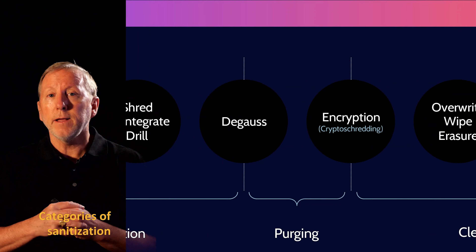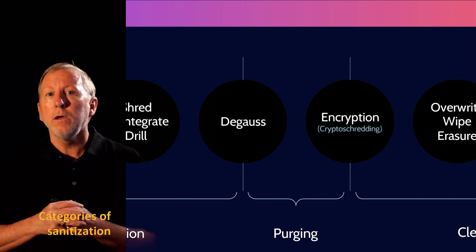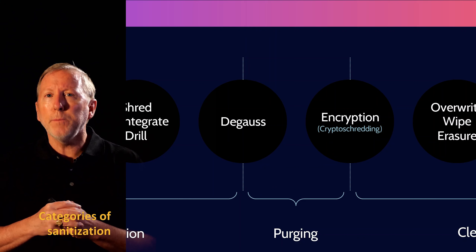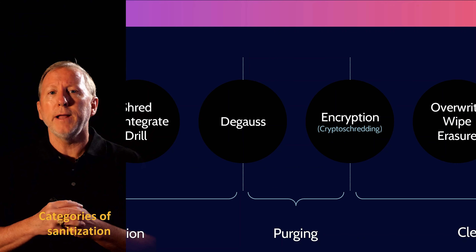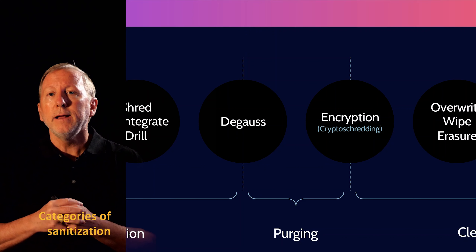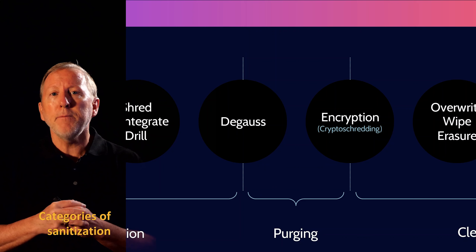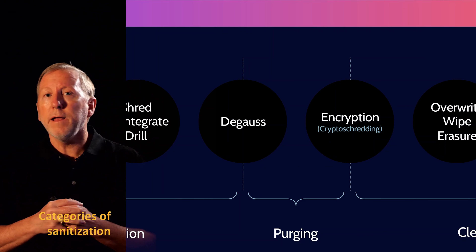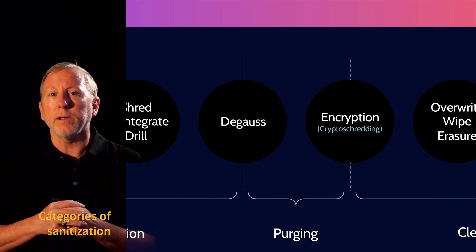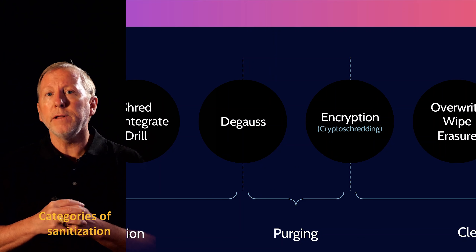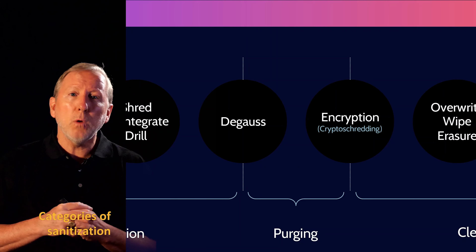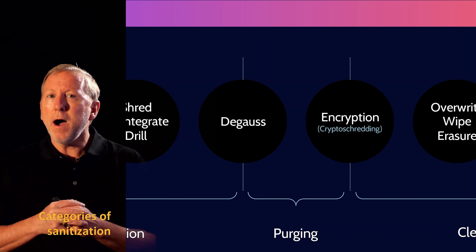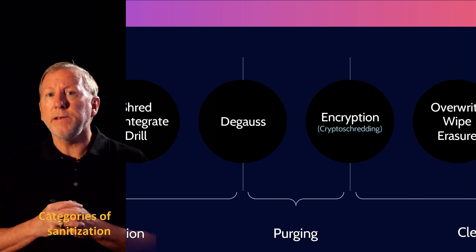Purging is a data deletion technique where data cannot be reconstructed by any known means. Encryption, specifically crypto shredding, is a popular purging technique. Additionally, degaussing is considered a type of destruction as well as a type of purging. This is because degaussing techniques often render media unusable as well as data unrecoverable, but the media typically remains intact.